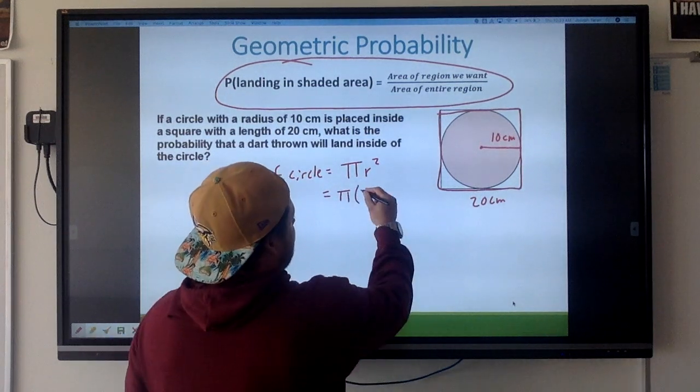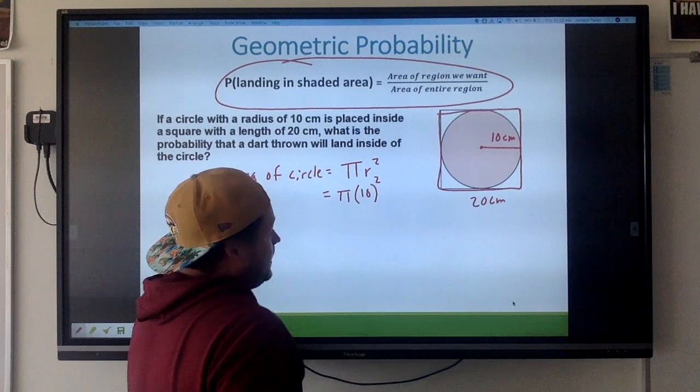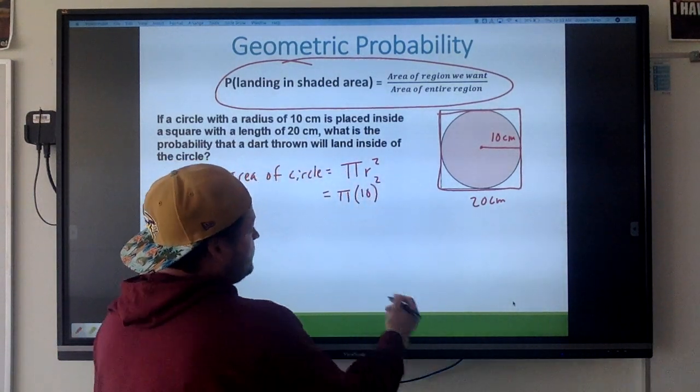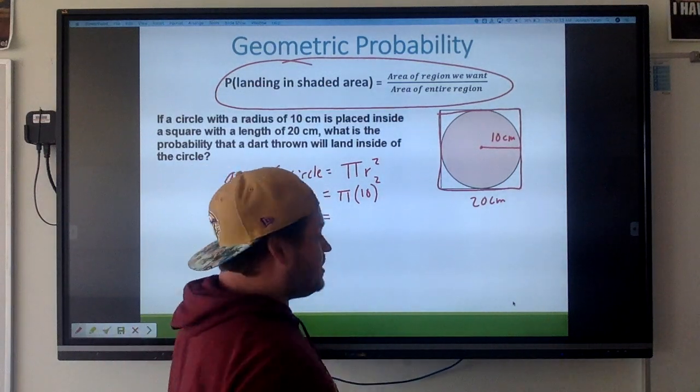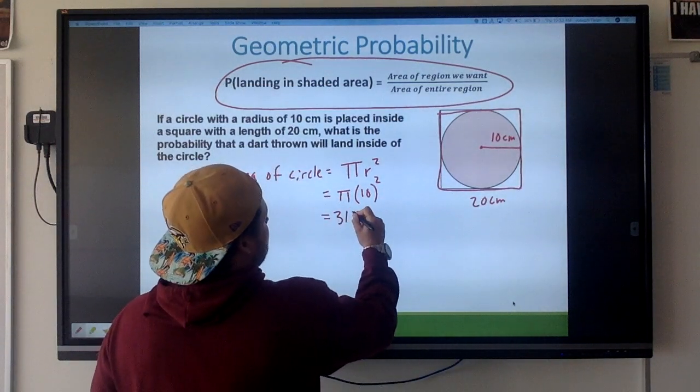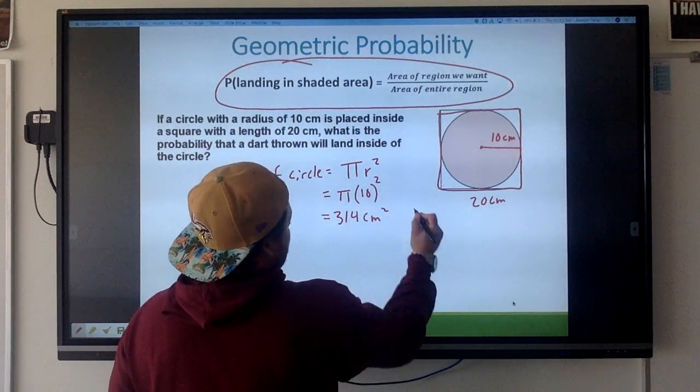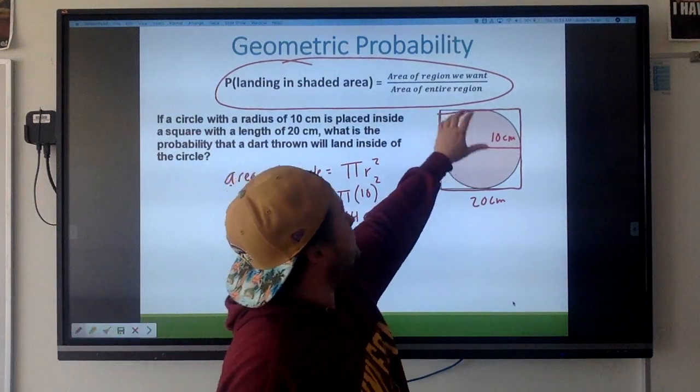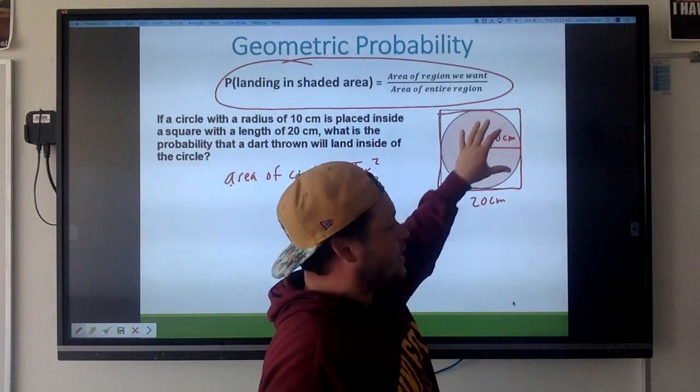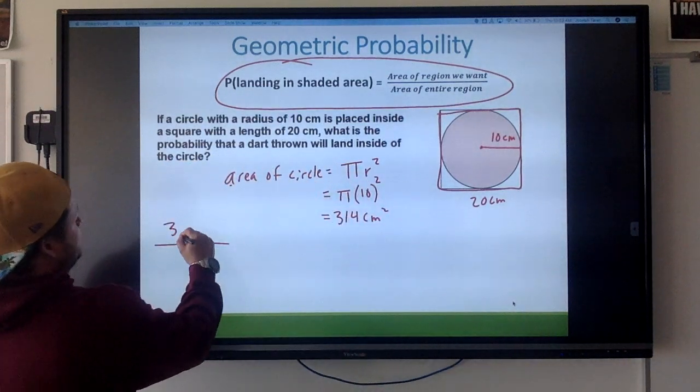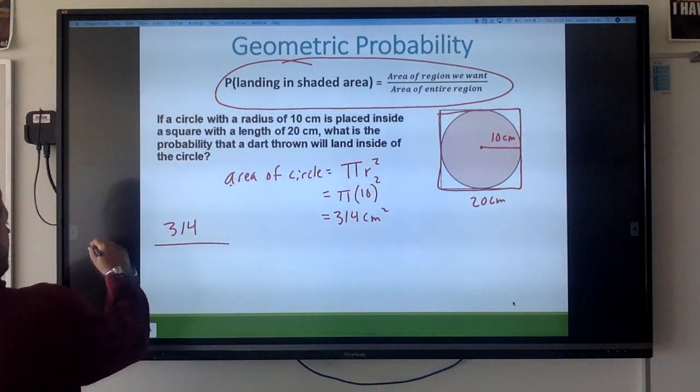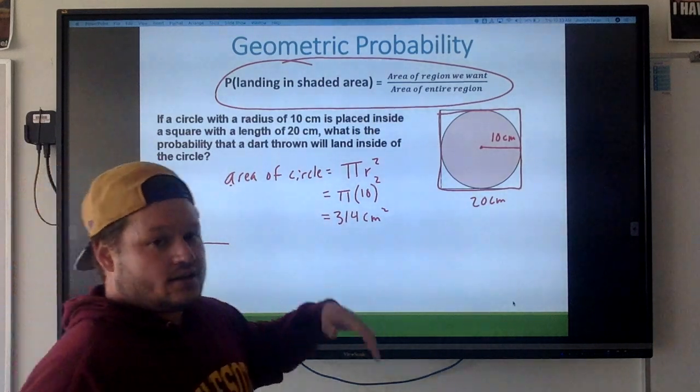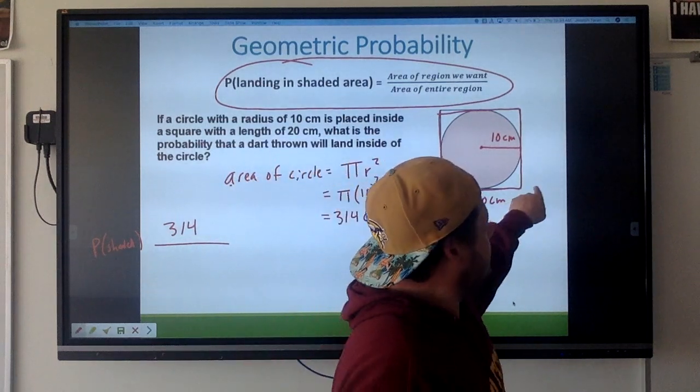If we remember, area of a circle, that's pi r squared. I'm just going to substitute 10 for my r. And when you're doing this, make sure you're doing the exponent first, so 10 squared is 100, 100 times pi. You can do it in a calculator if you want, but it's about 314 centimeters squared. So that's the area of the circle, that's my favorable outcome, that's the area of the region we want. So 314 over probability of shaded.